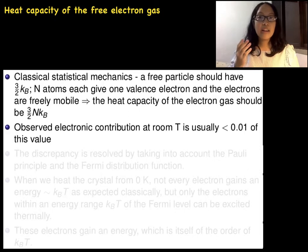If there are N number of atoms, each atom gives one valence electron to the electron gas. The electrons are freely mobile. Then the contribution of these mobile electrons to the heat capacity is 3/2 times N times kB.